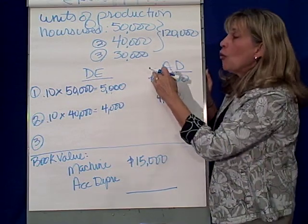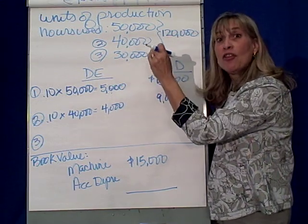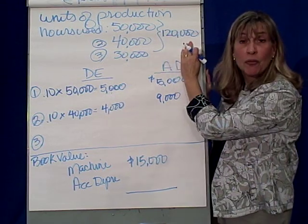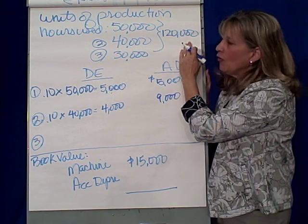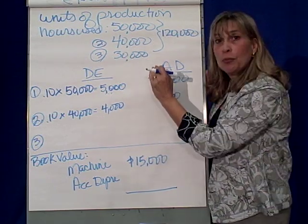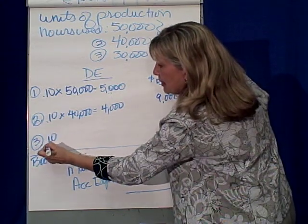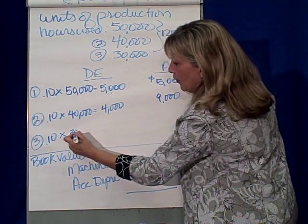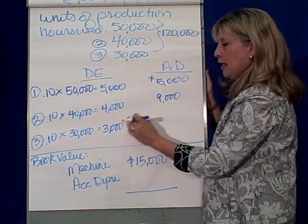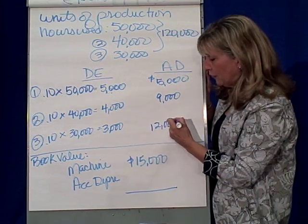In the third year, we can only depreciate 30,000 machine hours. The reason is we cannot depreciate beyond its useful life, which was 120,000 hours. So in year three, regardless of whether we used it 50,000 or 40,000 hours, we can only depreciate it to its life. At 10 cents per machine hour times 30,000 hours, we will depreciate $3,000, meaning accumulated depreciation now has a balance of $12,000.